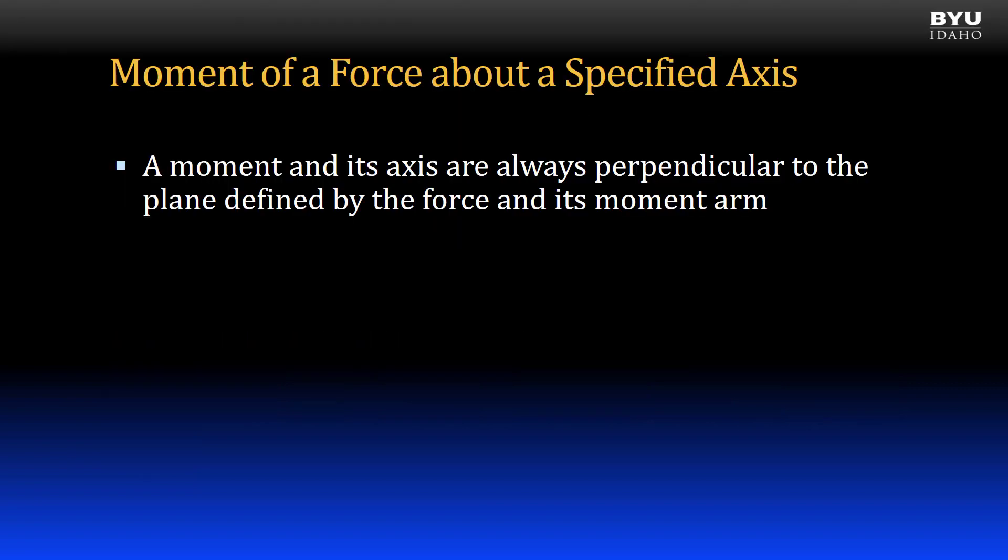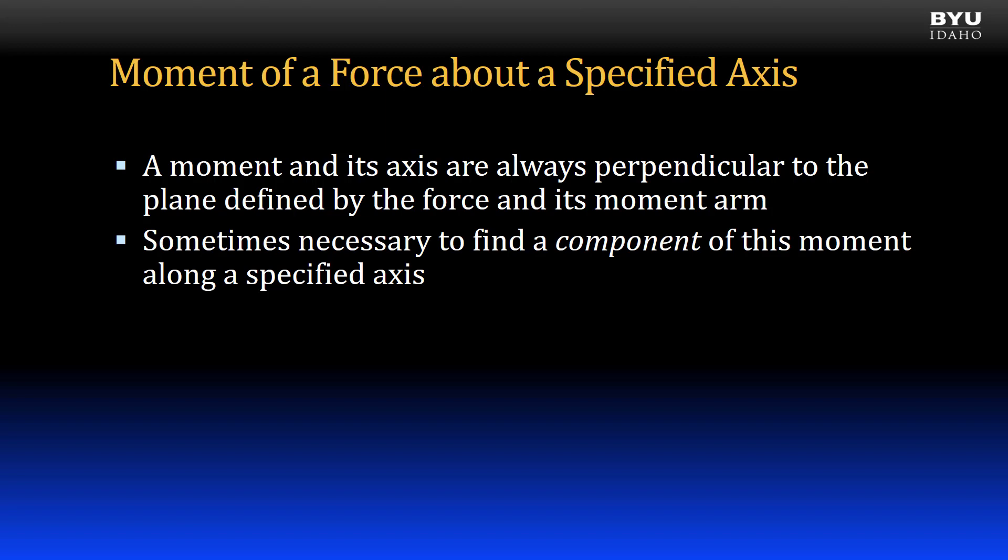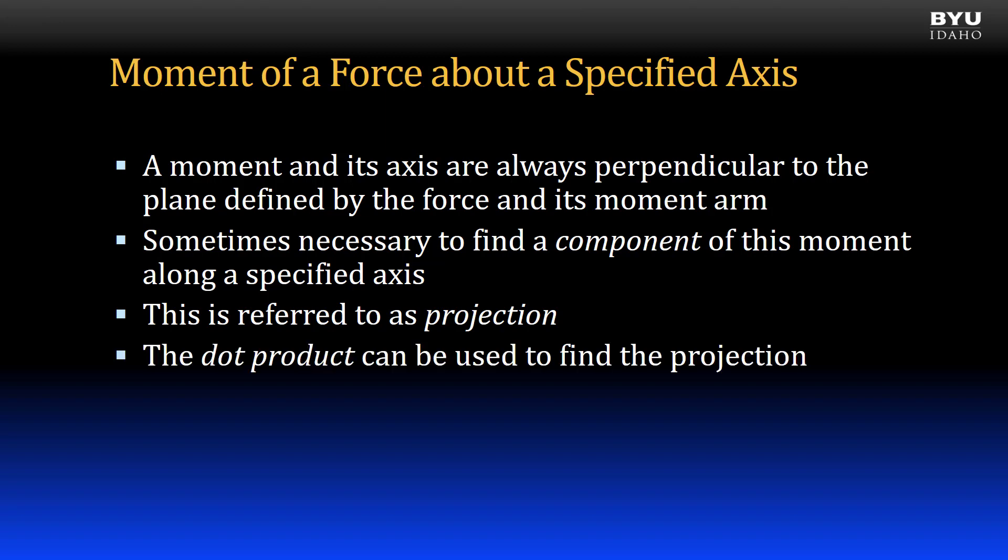When we find the moment of a force, the direction of that moment is perpendicular to the plane defined by the force and its moment arm. Sometimes what we want is the moment about a specific axis rather than the full moment that's perpendicular to that plane. The component of the moment along a specific axis is referred to as a projection. We find it using the same method that we used when we were projecting a force vector onto an axis. That is, we use the dot product.